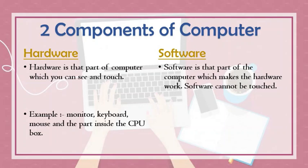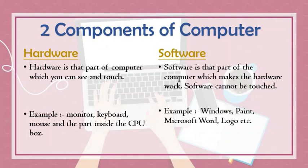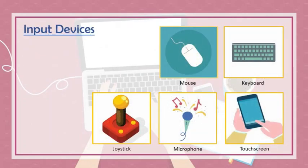Software is that part of a computer which makes the hardware work. Software cannot be touched. For example, Windows, Paint, Microsoft Word, Logo, etc. All these are software or programs. We work on them but we cannot touch them.